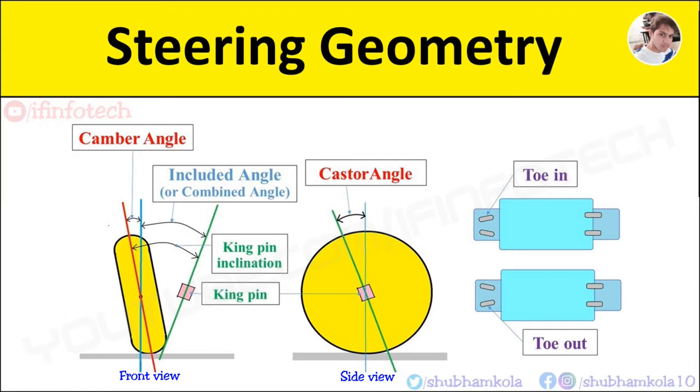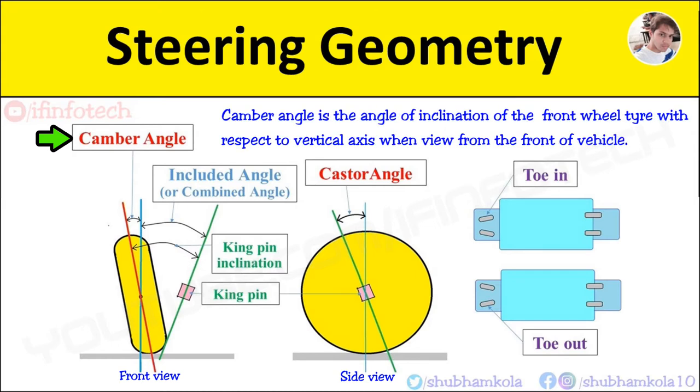Camber angle is the angle of inclination of front wheel tire with respect to vertical axis when viewed from front of vehicle. Camber angle should not exceed 2 degrees. If wheel tilts inward, it is called as negative camber angle.